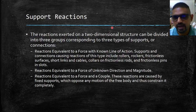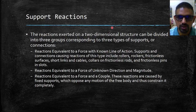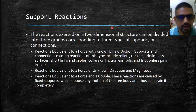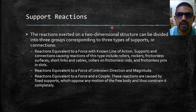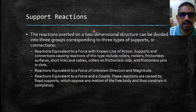The second type is a reaction equivalent to a force of unknown direction and magnitude — where you know neither the magnitude nor the direction of the reaction force. The third type is a reaction equivalent to a force and a couple, caused by fixed supports which oppose any motion of the free body and thus constrain it completely.